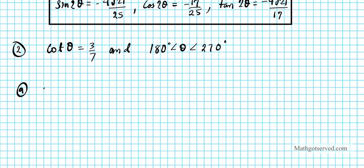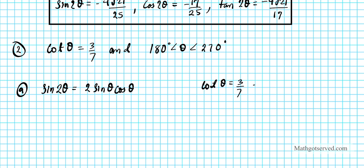First, we're looking for sine 2θ. Using the double angle identity, sine 2θ equals 2 sine theta cosine theta. Cotangent is not the reciprocal of either of these two. But cotangent theta equals 3 over 7 tells us that its reciprocal, tan theta, is 7 over 3. With tangent, we can use the SOH-CAH-TOA relationship to find sine and cosine, then plug them in to find sin 2θ.